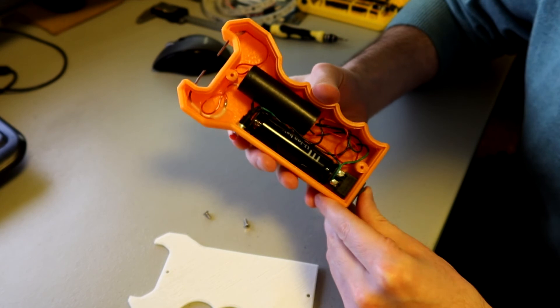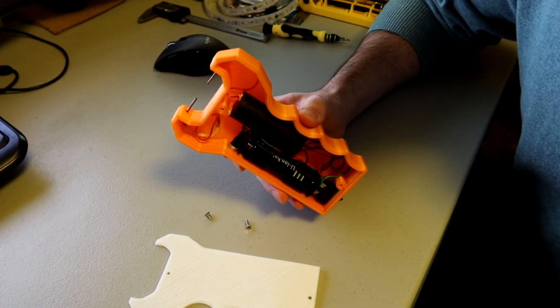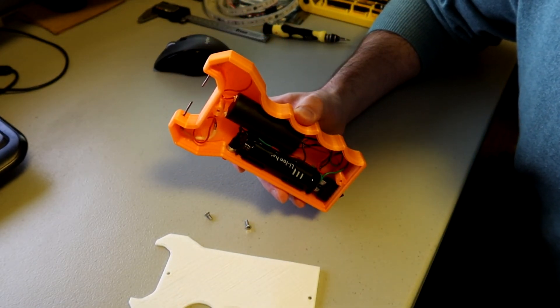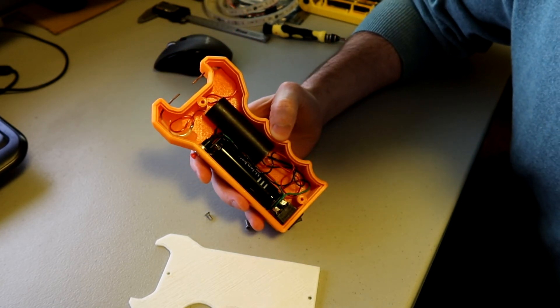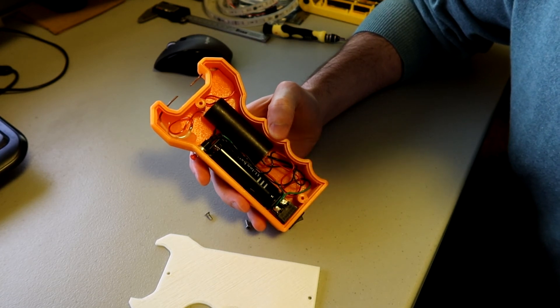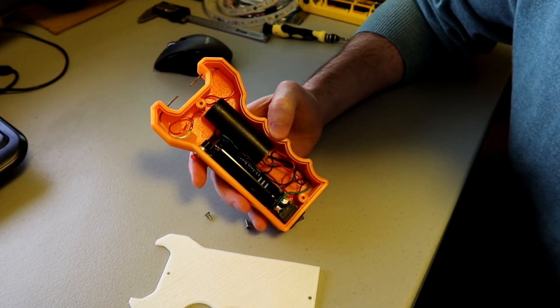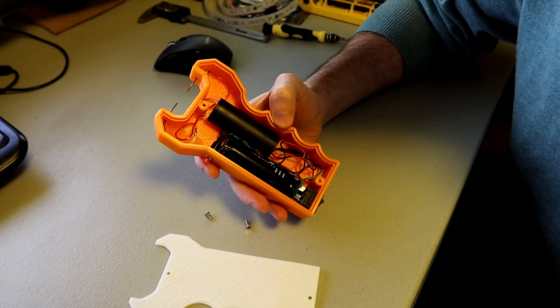So that's basically it. That's the basic construction of this 3D printed taser slash stun gun. I hope you liked the video. I plan on making more videos like this, so if you're interested in more electronics and engineering videos then like, share, and subscribe and I will see you next time.